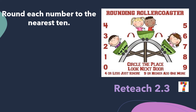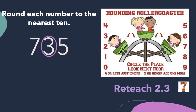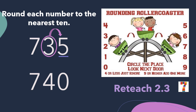Let's do number seven, 735. Circle the place — we're rounding to the nearest 10, so we're circling the tens place. Look next door — we're looking at the digit to the right. Five or higher, add one more. So this boss digit tells the three to add one more. So when we write our rounded number, we're going to write a new digit in the tens place. One more than three is four. Now anything to the right of that place becomes a zero, and anything to the left of the place stays the same. So 735 rounded to the nearest 10 is 740, because 735 is closer to 740 than it is to 730.